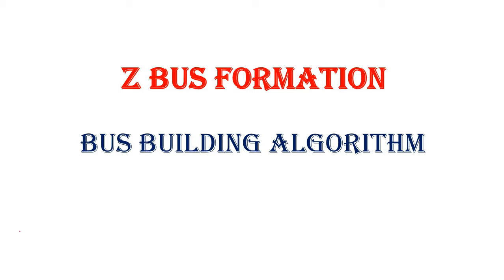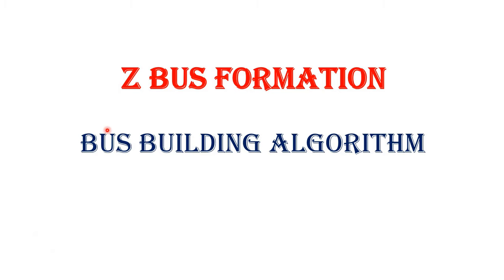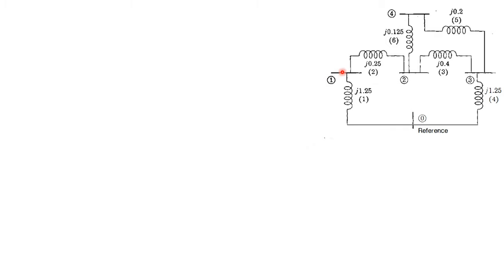Hi y'all. In this video, I am going to explain how to form the Z-Bus Matrix using the Bus Building Algorithm. Consider a problem. This power system network consists of four buses — bus number one, two, three, four — and one reference bus. The four buses correspond to a four-by-four matrix. So the order of the Z-Bus Matrix is four cross four. Next I am going to explain how to form the Z-Bus Matrix.